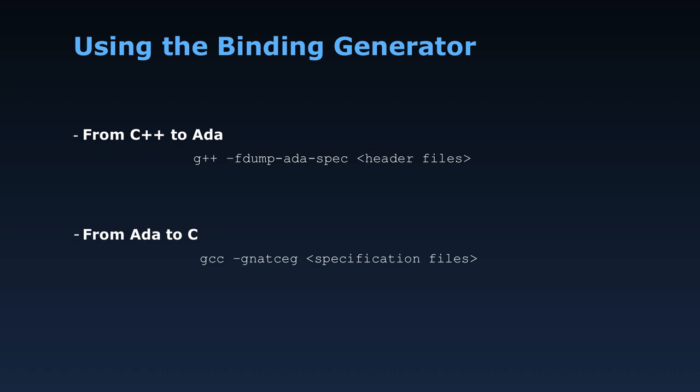We provide binding generators. There's one from C++ to Ada or from C to Ada: using GCC or G++ with the -fdump-ada-spec flag plus the list of header files you want to create Ada specs for. You can also go the other way from Ada to C using the gnat CEG tool, which generates a header file corresponding to an Ada specification. You may want to wrap that in a nicer structure, but for the low-level layers this is very useful.